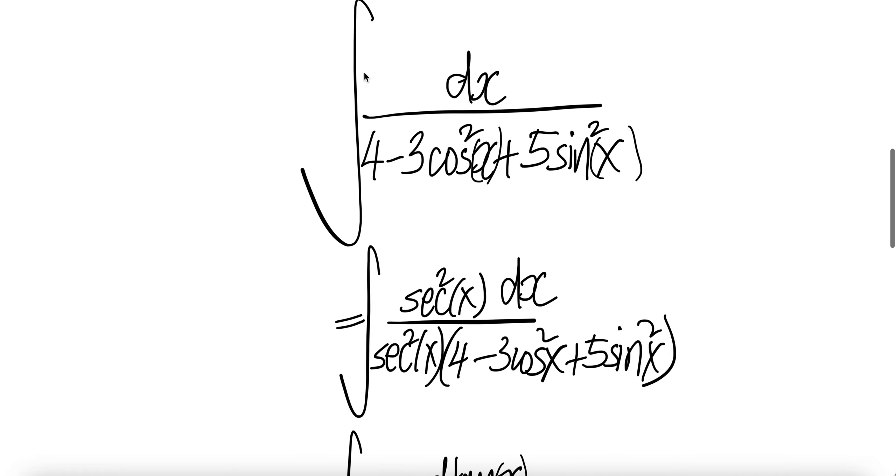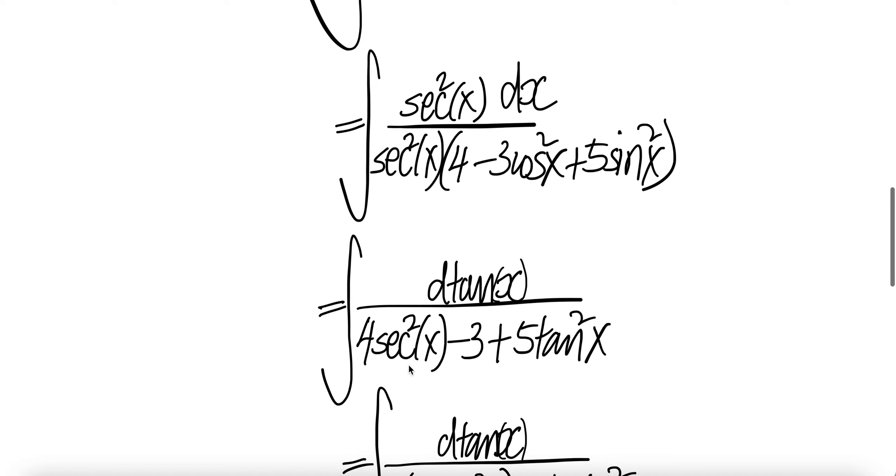We're going to multiply top and bottom with sec square x. Now let us push this into dx. The derivative of tangent x is sec square x dx. So this piece is the same as that.